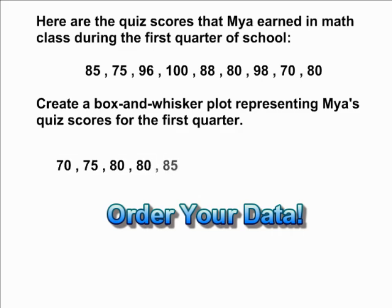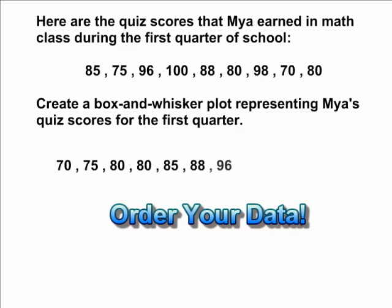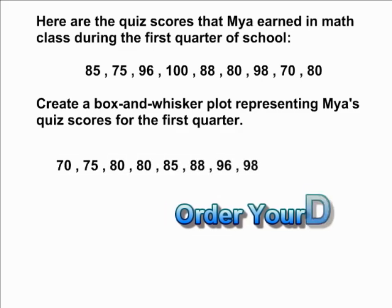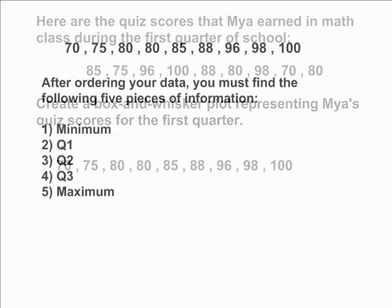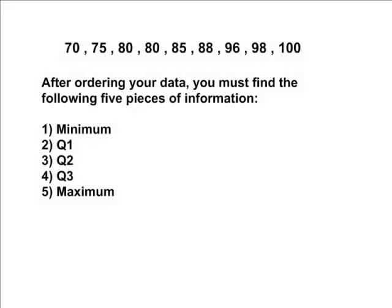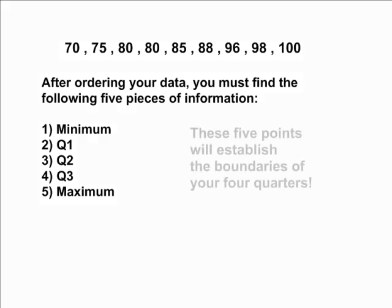The first step to creating any box and whisker plot is to take the given data and order it from least to greatest. After you have completed ordering your data, there are five important pieces of information that you must find in order to construct your box and whisker plot.